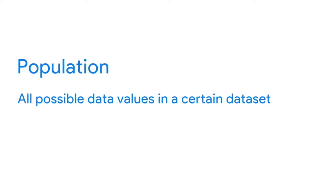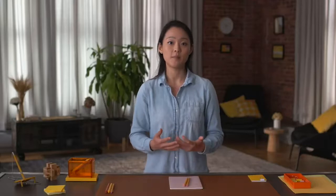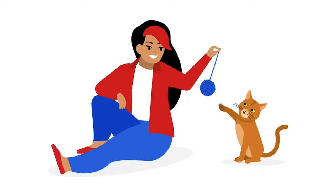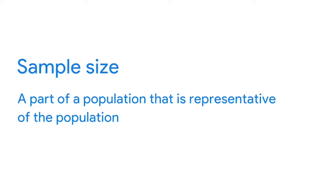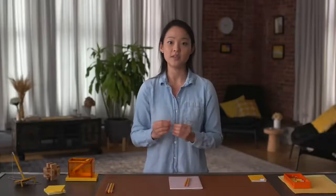Earlier we talked about having the right kind of data to meet your business objective and the importance of having the right amount of data. For data analysts, a population is all possible data values in a certain dataset. If you're able to use 100% of a population in your analysis, that's great. But sometimes collecting information about an entire population just isn't possible — it's too time consuming or expensive. For example, if a global organization wants to know which kinds of toys cat owners in Canada prefer, there are millions of cat owners in Canada, so getting data from all of them would be a huge challenge.